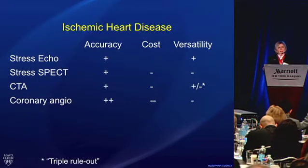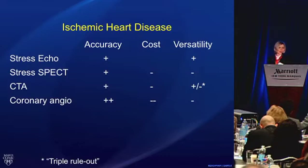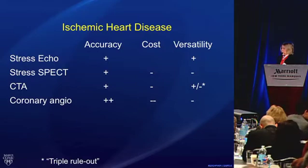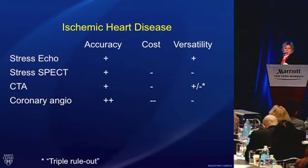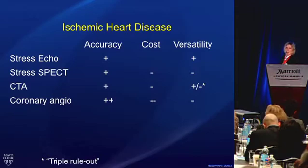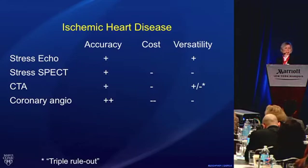If we consider the patient where we're trying to rule out ischemic heart disease — presenting with chest pain or dyspnea — and look at the various tests we can use, I've approximated their accuracy, cost, and versatility. The accuracy of coronary angiography is considered the gold standard, but it sometimes shows a blockage without telling us about its functional significance — a stress test better defines that. CT angiography shows the anatomy provided it's not obscured by overlying calcium. Stress echo is the least expensive; coronary angiography is considerably the most expensive. But importantly, the versatility of stress echo — its ability to recognize other causes of chest pain besides coronary artery disease — is really unparalleled.